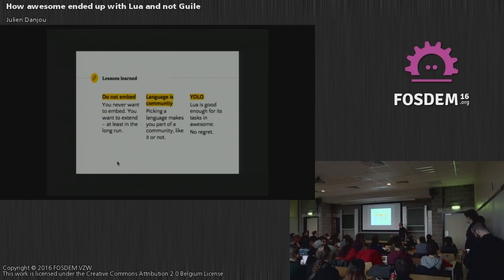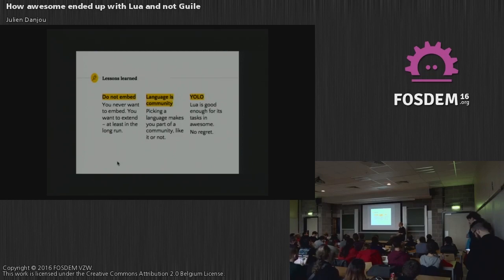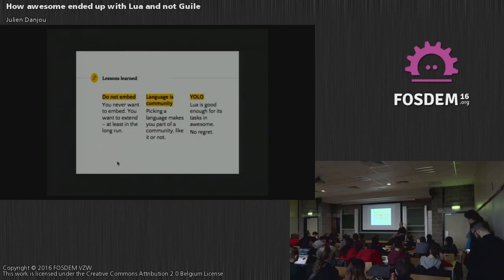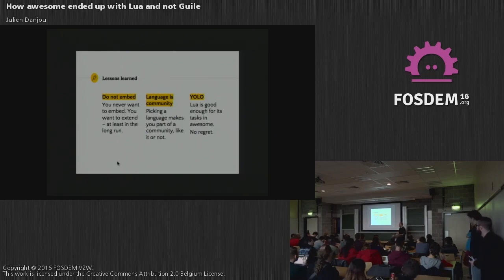Of the few lessons we learned: don't embed. You'll see code size tends to decrease because you do more in your language. When you can't write from scratch in the language you want — Guile, Lua, whatever — you have to write C, so you tend to think your program that way. But it's way better to say: I'm going to do everything in Guile or Lua or whatever, and write the bindings. When you pick a language, you become part of the community with the good and the bad parts. For us, the Lua community was pretty good, so it was a good choice.